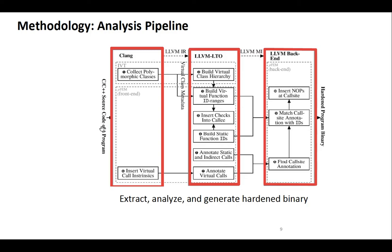Here we can see the architecture of our approach. We modify the Clang/LLVM compiler. On the left we can see how a program is input into the front end of the compiler, where we collect some primitives, then push them through the compilation pipeline. We build class hierarchies, count how many parameters each function passes and their types, traverse the subclass hierarchies, assign appropriate IDs, and put those IDs and checks in place in the back-end part of the compiler. Then we release the hardened application.